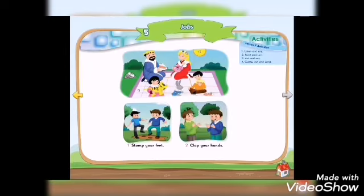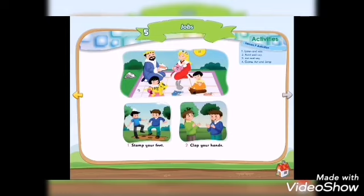Okay KG2, now activity page 49 — we have two pictures. You can do these activities with your siblings at home. Give these instructions and your brother or sister has to respond and follow. Number one: stamp your feet, stamp your feet — stomp your feet. Number two: clap your hands, clap your hands.